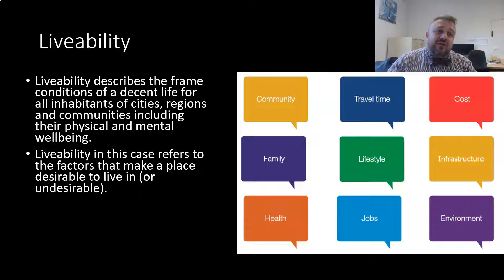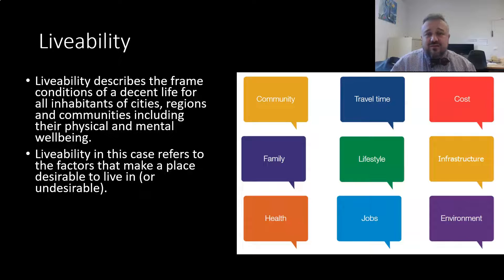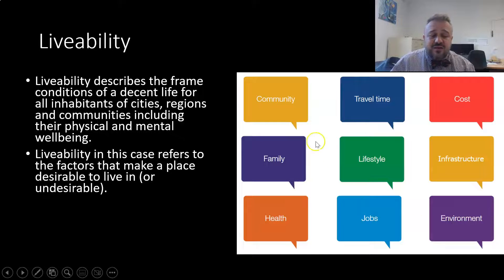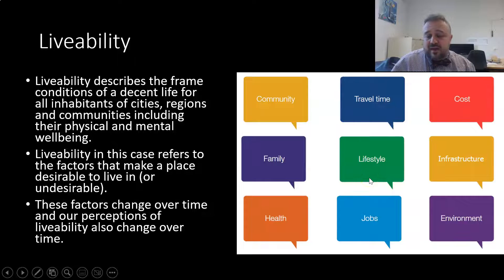For example, the Economist every year ranks around 130 cities, producing a top 10 and bottom 10 cities to live in. They use all sorts of measures, tending to focus on factors like the ones shown here. These factors, however, will change over time — meaning two things.